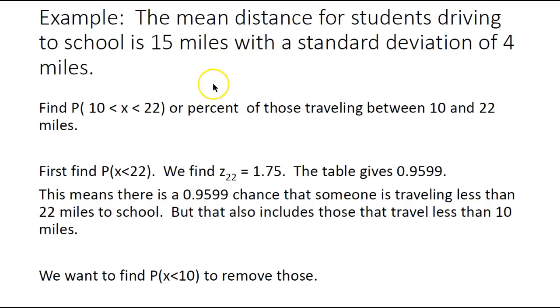Here's a last example. The mean distance for students driving to school is 15 miles with a standard deviation of 4 miles. Find the probability a student drives between 10 and 22 miles. Since the table only gives you the amount to the left, let's look up the 22.